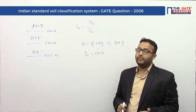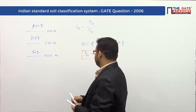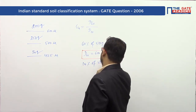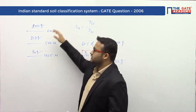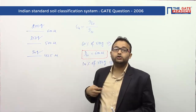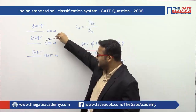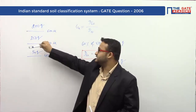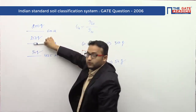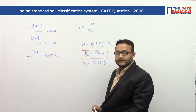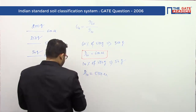Similarly, D10 means 10% of the material is finer than that dimension. So 10% of 500 grams equals 50 grams. We identify through which sieve only 50 grams is passing. Through the 500 micron sieve, only 50 grams passes, which is exactly 10% of the total material. Therefore, D10 = 500 microns.